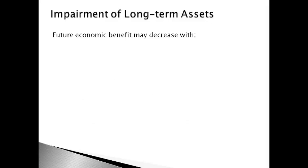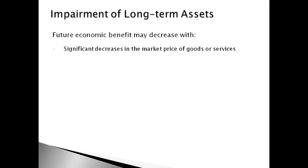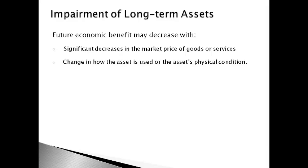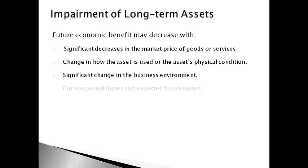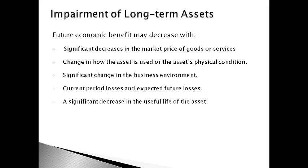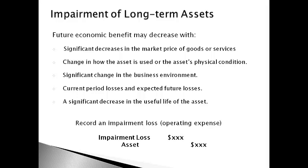The future economic benefit is likely to decrease when the company experiences significant decreases in the market price of goods or services sold, a change in how the asset is used or the asset's physical condition, a significant change in the business environment, current period losses or expected future losses, or a significant decrease in the useful life of the asset. Impairment loss is reported on the income statement as an operating expense because the loss occurs on assets used for operations.